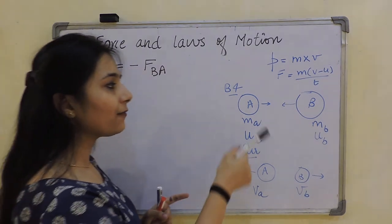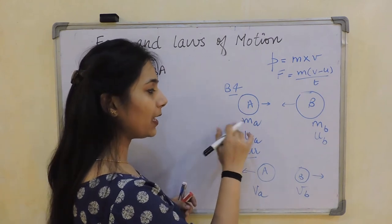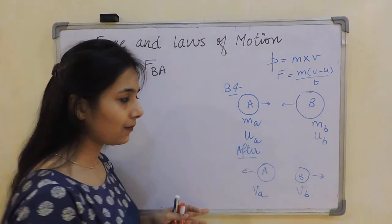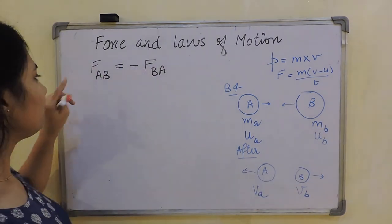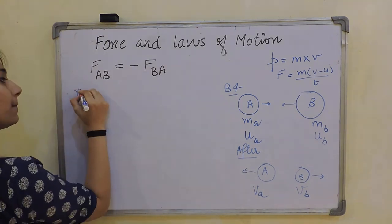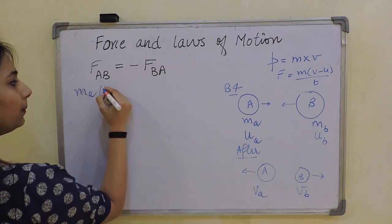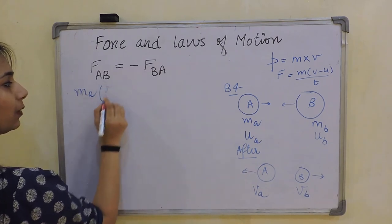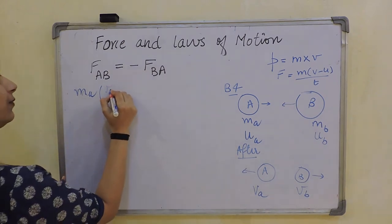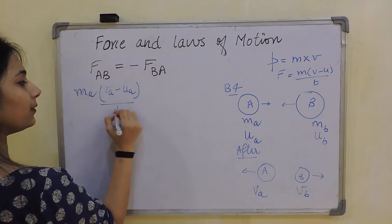Now after you have drawn the diagram, you'll mention the initial mass of ball A and initial velocity of ball A, uₐ. Since the question says force applied by A on B, I'll take that as mass A: mₐ(vₐ - uₐ) divided by t, the time taken.